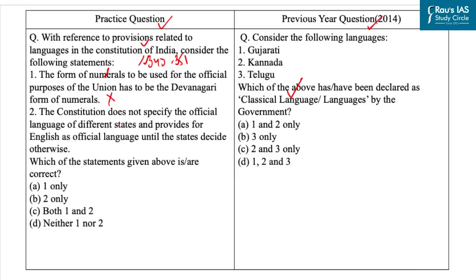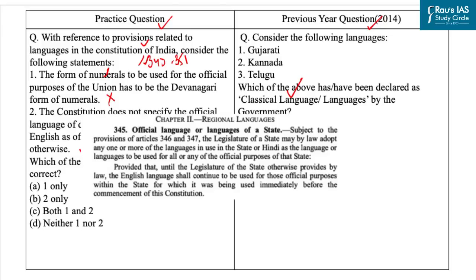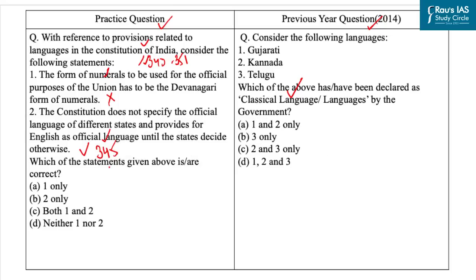The second statement is: the Constitution does not specify the official language of different states and provides for English as the official language until the states decide otherwise. This statement is correct. According to Article 345, the legislature of a state may adopt any one or more of the languages in use in the state, or Hindi, as the official language of that state. Until that is done, English continues as the official language of that state.